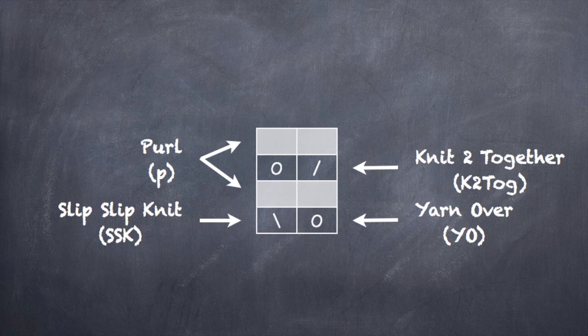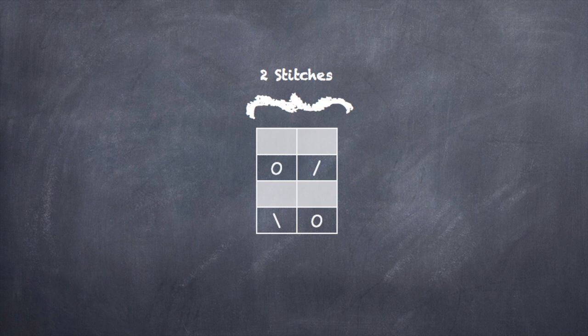So on the wrong side of our row, we will be purling these. So as we said before, this is done over two stitches, two columns, and four rows.